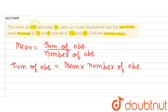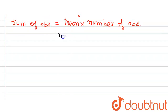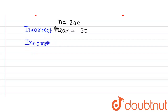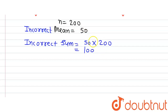We are given the mean of 200 items, so the number of observations n is 200 and the mean is 50. Since the sum we have taken is not correct, this is the incorrect mean. The incorrect sum equals mean multiplied by number of observations, that is 50 × 200, which gives us 10,000.